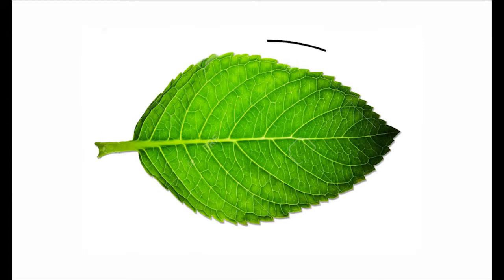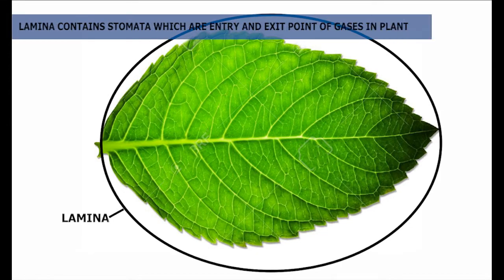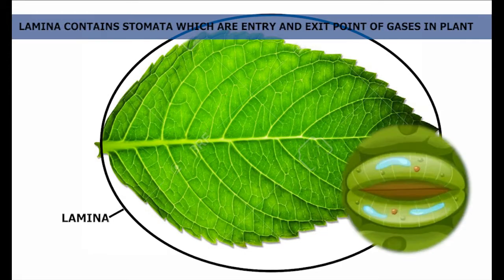2. Lamina. The flat portion of the leaf is called leaf lamina or leaf blade. Lamina contains stomata which are entry and exit points of gases in plants.